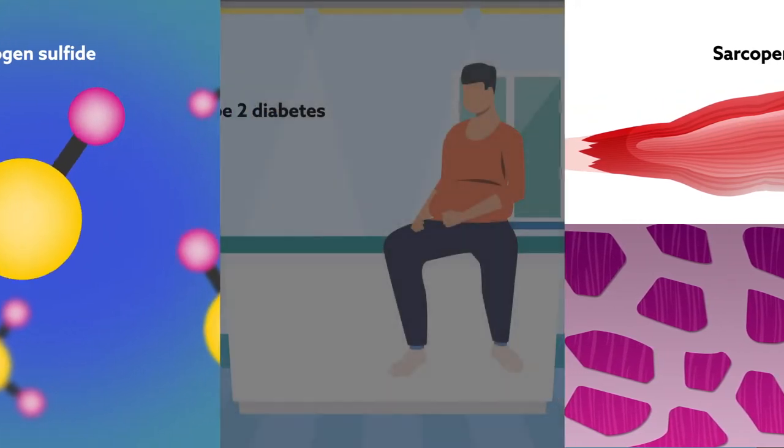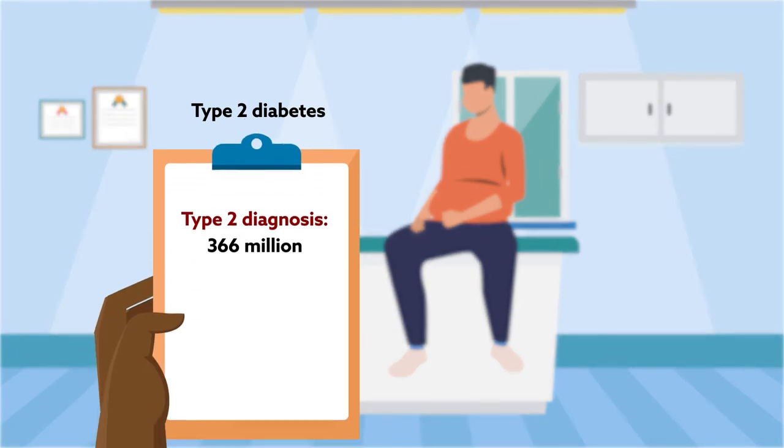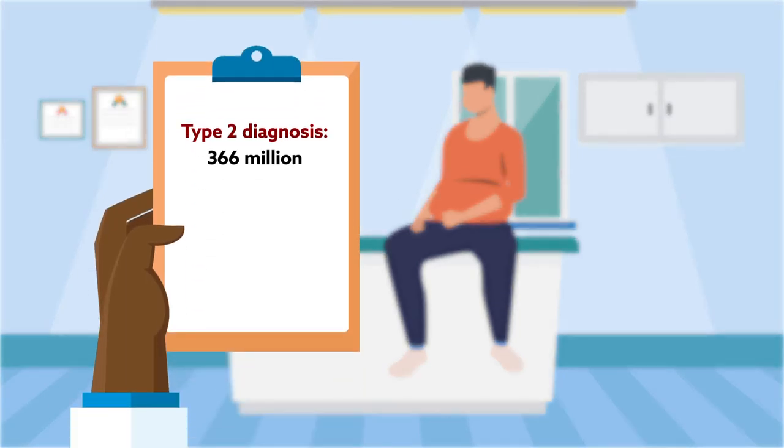Type 2 diabetes is one of the biggest health and development challenges of the 21st century. Currently, 366 million people live with type 2 diabetes, and another 280 million are at high risk. By 2030, those numbers are expected to double.